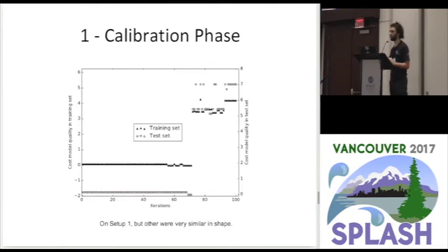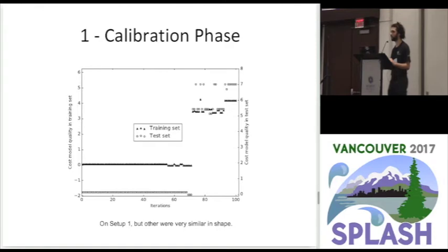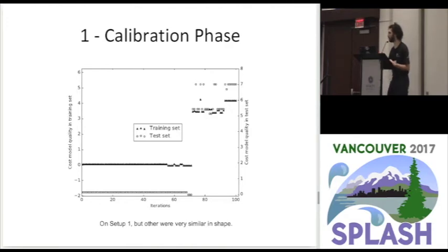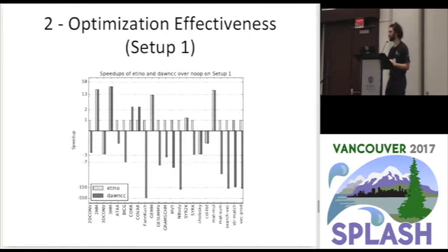The first experiment concerns the auto-tuning calibration phase. The figure shows that over simulated annealing iterations, when we eventually make the training set benchmarks faster, the test set benchmarks — which the algorithm has not seen — also get faster. The circles represent the test set and the triangles represent the training set. So when we improve the training set, we find a general model that also optimizes the test set. This was consistent across different architectures.